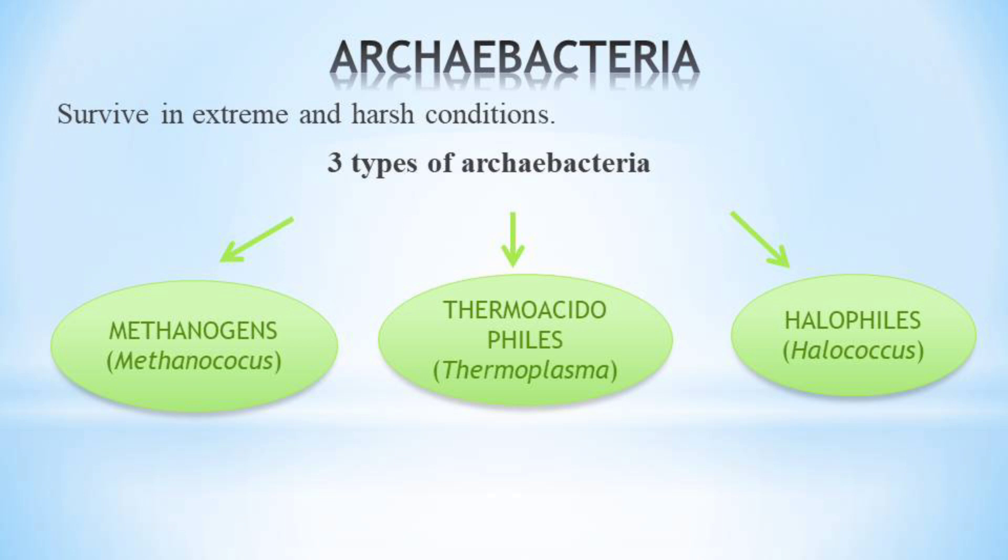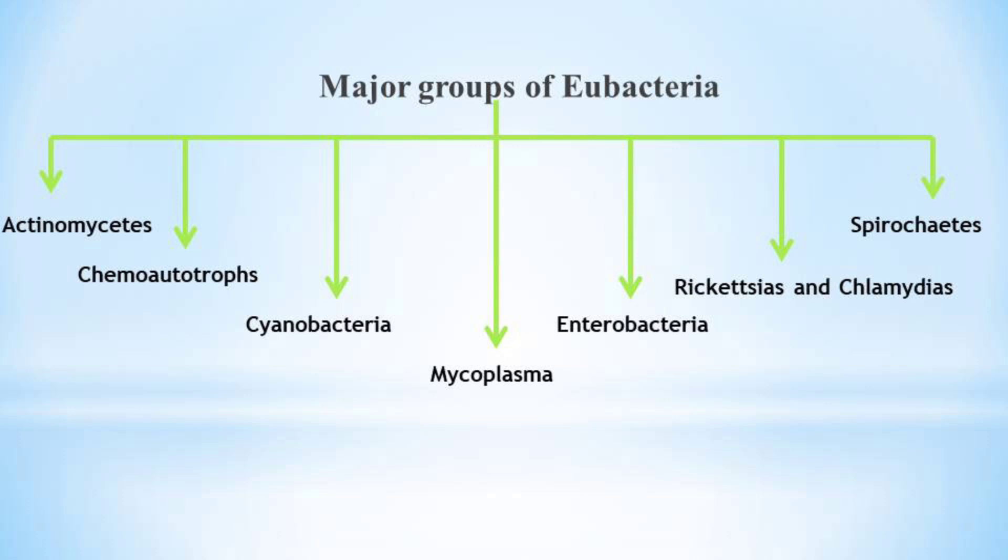Halophiles are found in salty environments like the Great Salt Sea and Dead Sea — for example, Halococcus. There are approximately seven major groups of Eubacteria. The first one is Actinomycetes, which are gram-positive soil bacteria that form branching filaments — for example, Streptomyces.